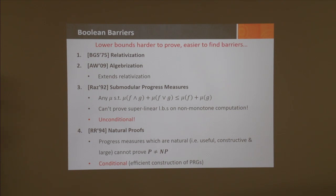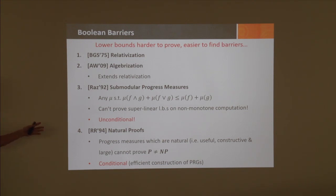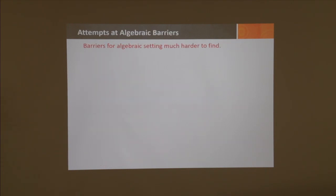Then two years later, Razborov and Rudich came up with natural proofs. They showed that no progress measure which is natural—useful, constructive, and large—can separate P from NP, under the assumption that you cannot construct PRGs efficiently. This is a barrier that's much stronger, but it's conditional. In the algebraic setting, since it's easier to prove lower bounds, it must be hard to find barriers—and that's indeed the case.